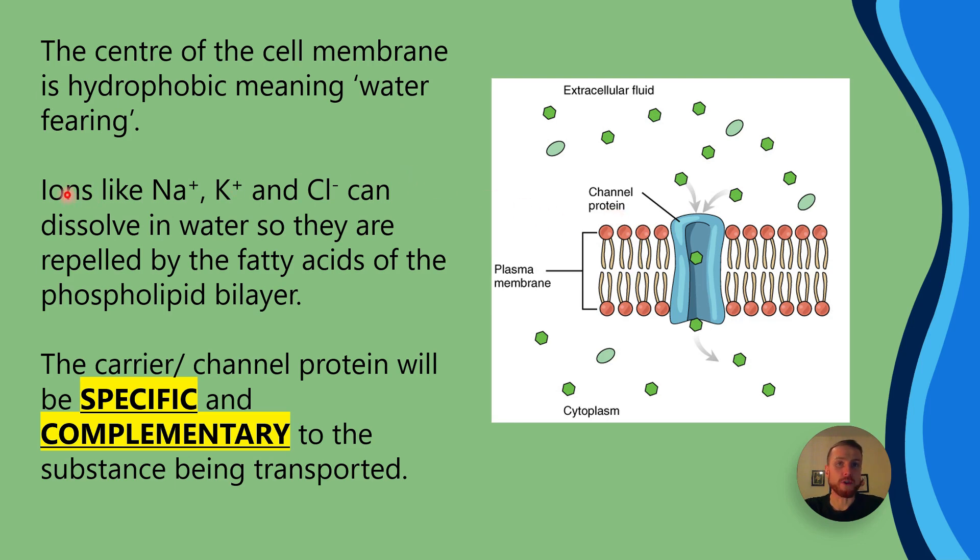Now, the ions we're talking about are those like sodium, potassium, or chloride ions. And they can dissolve in water, which means the hydrophobic nature of the saturated or unsaturated fatty acids is going to repel them. So to get around this, we've evolved to have specific complementary carrier or channel proteins in our membrane. Now, make sure you know that they're specific and complementary to the substance being transported. So by that, I mean sodium's got its own specific and complementary channel, potassium's got its own specific and complementary channel, and chloride ions also have their own specific and complementary channel.